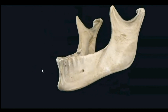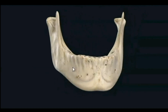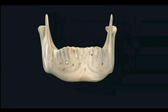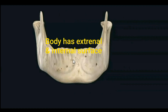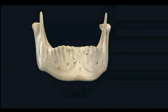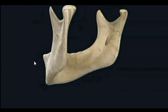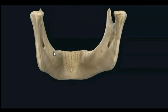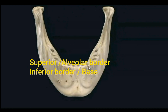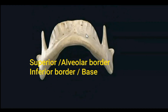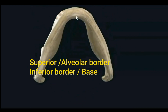The body of the mandible has external and internal surfaces, and superior and inferior borders. The superior border is also called the alveolar border; the inferior border is also called the base of the body of the mandible.